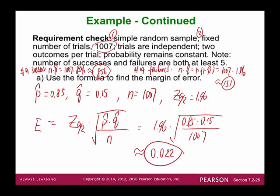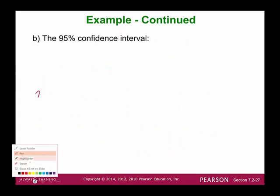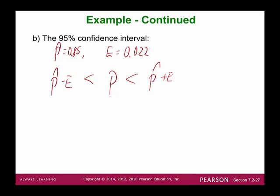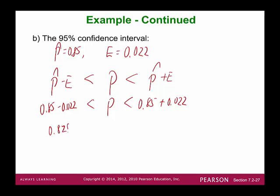Now that we know the margin of error, we can construct the 95% confidence interval. P-hat is 0.85 and margin of error is approximately 0.022. Lower limit: 0.85 − 0.022 = 0.828. Upper limit: 0.85 + 0.022 = 0.872. So the 95% confidence interval is (0.828, 0.872).